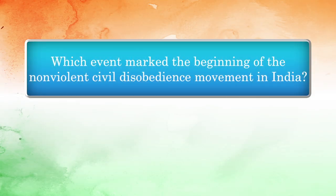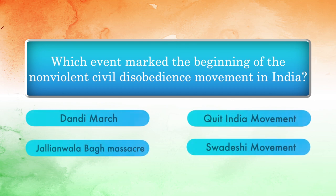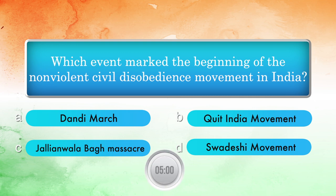Which event marked the beginning of the non-violent civil disobedience movement in India? Options: Dandi March, Quit India Movement, Jallianwala Bagh Massacre, Swadeshi Movement. Answer: Dandi March.